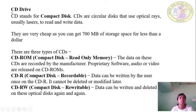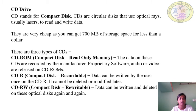Next, the compact disk, also called CD. CDs are circular disks that use optical rays for storing data and performing read and write operations. They are very cheap — you can get 700 MB of storage space for less than a dollar.